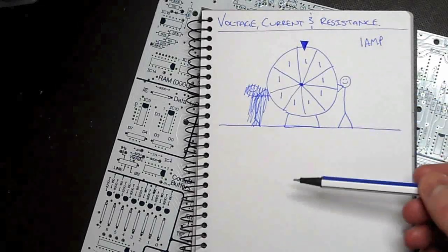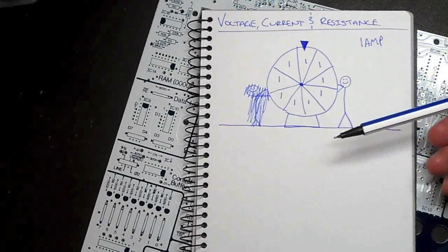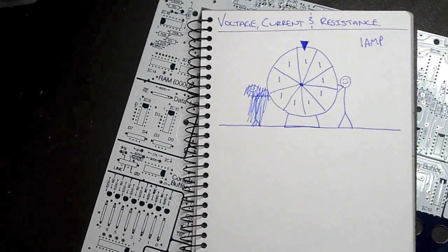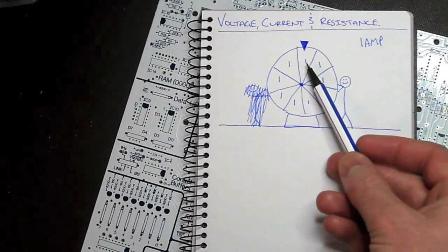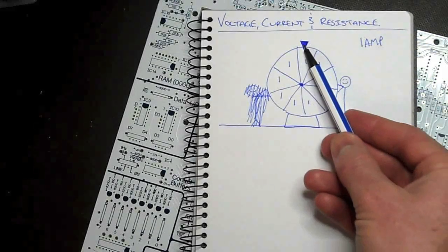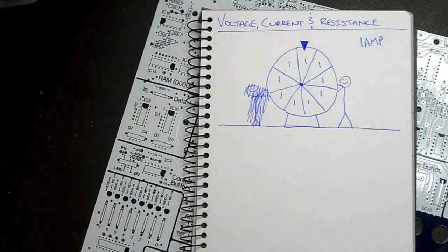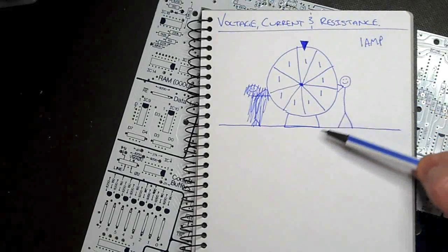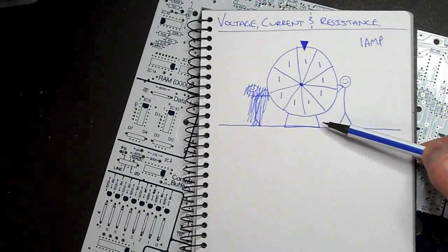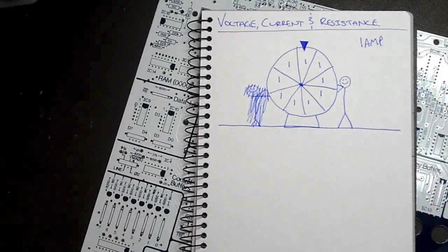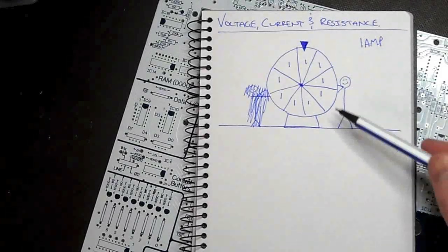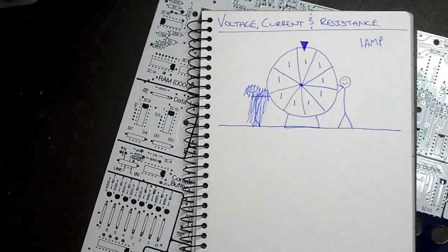If we spun it twice as fast, so we gave it twice as much force, or twice as much voltage, then we would get two of these segments passing this little ticker every second. So we'd get two amps. The faster we push it, or the more force we give it, or the more voltage that we apply, then the more current we get, because this will spin faster.